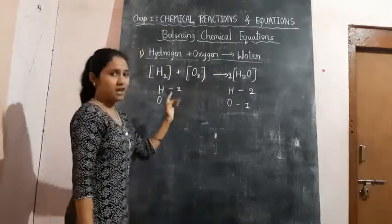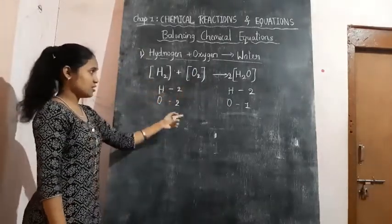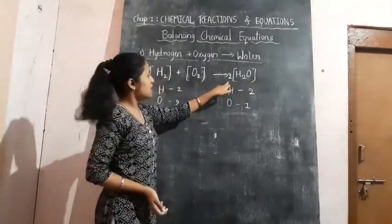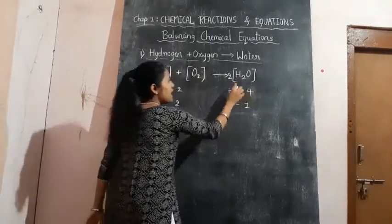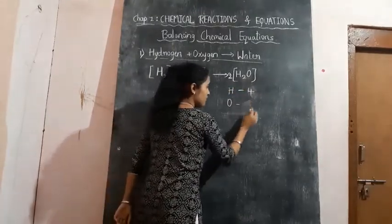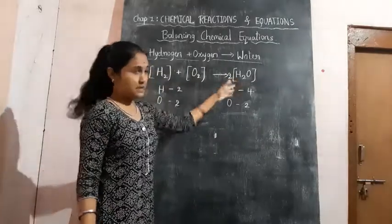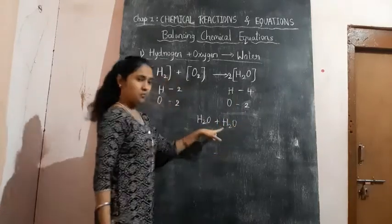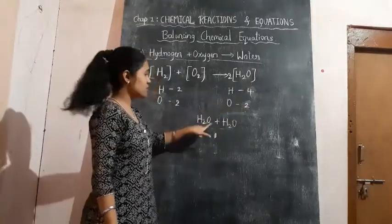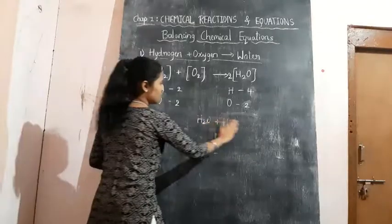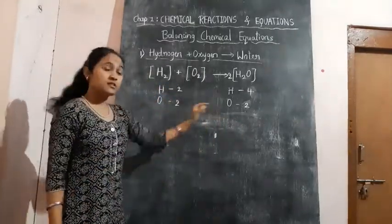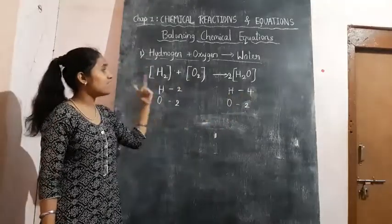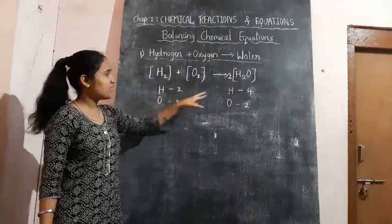Now again we compare the number of atoms on each side. On the reactant side hydrogen is 2 and oxygen is 2. For 2H₂O on the product side, we multiply: 2 × 2 gives 4 hydrogen atoms, and 2 × 1 gives 2 oxygen atoms. To understand this: 2H₂O means H₂O + H₂O, giving 2H + 2H = 4 hydrogen and 1 + 1 = 2 oxygen. Now oxygen is balanced, but hydrogen is not — reactant side has 2 hydrogen and product side now has 4.